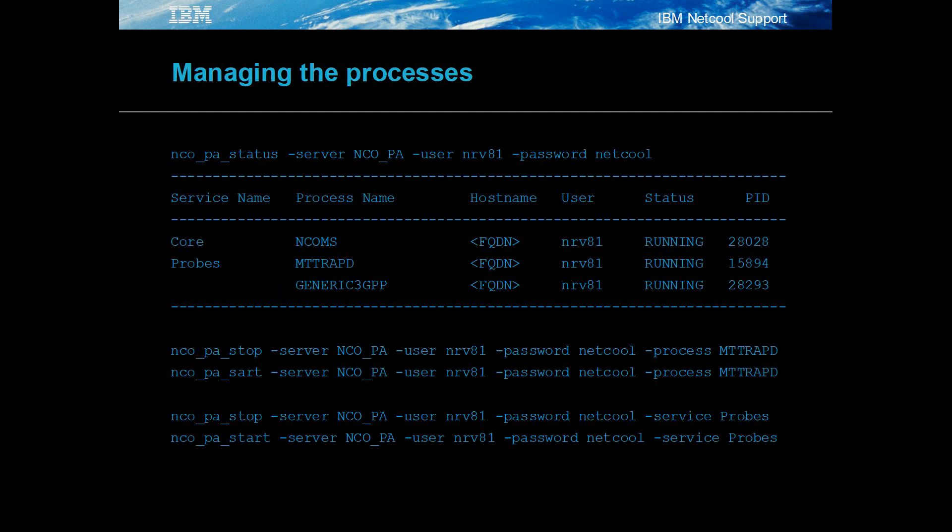Once everything is running, the nco_pa commands can be used to check what processes are running and manage the processes and services. In this example, the processes are all active, indicated by the string 'running'.